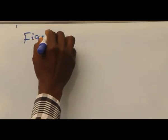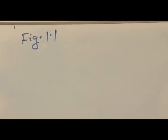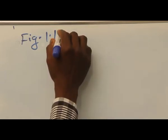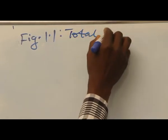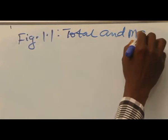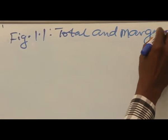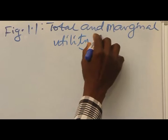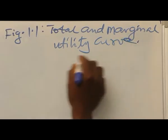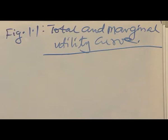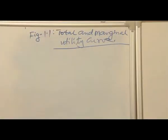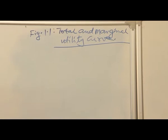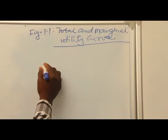Figure 1: Total and Marginal Utility Curve. The table above can be represented by means of a graph. So we take our normal graph like this.